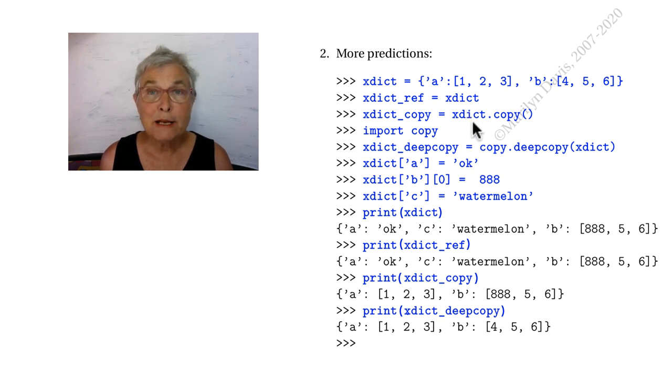And then we'll make a copy, which is a shallow copy, and we'll import the copy library, do a deep copy, and that'll be totally independent.